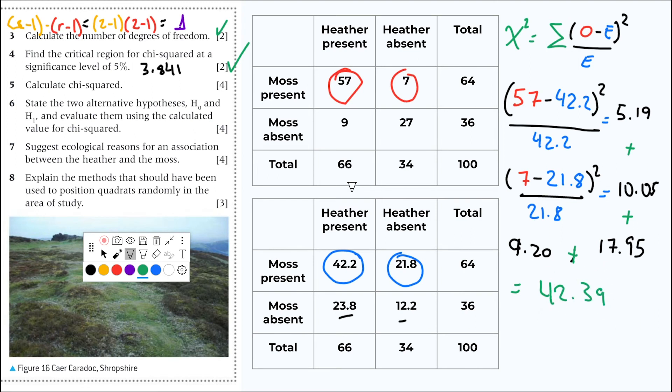In the end your chi-square will be 42.39. This is our calculated chi-square. It's 42. Very different from the critical region. Now you do this, four more marks. You're doing great.